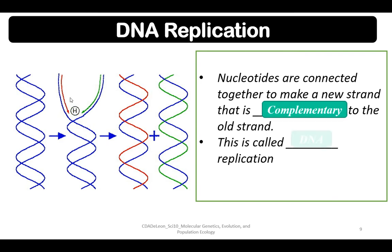This is called DNA replication. From one parent DNA, we can produce two copies of DNA — like a photocopy. They are exactly the same in composition.